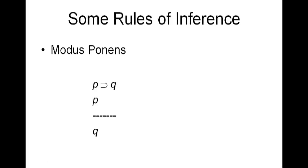We'll begin with modus ponens — this is the most familiar. If we've got 'if p then q' and p as our premises, then we can conclude q. This is in some sense the most basic of the rules of inference.